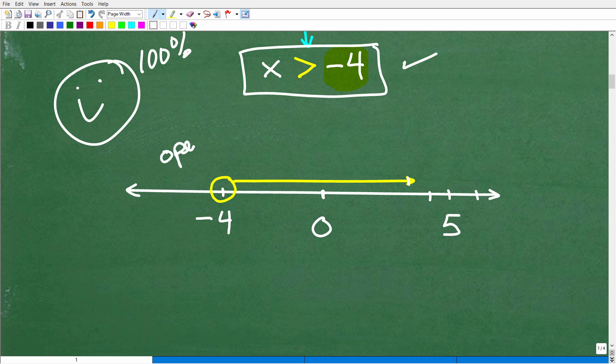Okay? So, you always start with an open circle. Because what this is saying is the solution is all x's that are greater than negative 4, but not including the actual value negative 4.